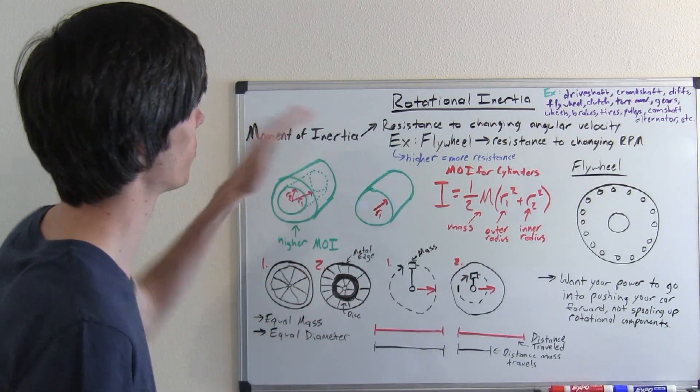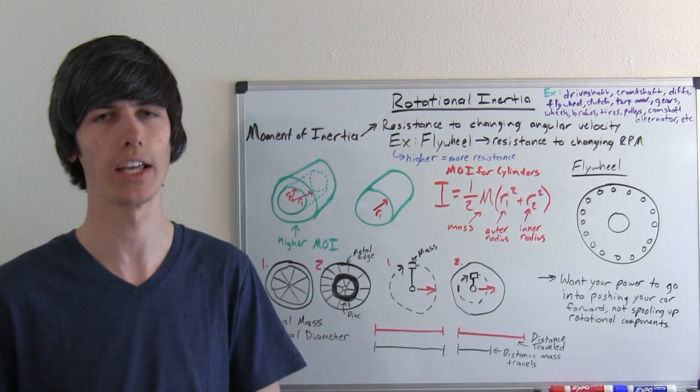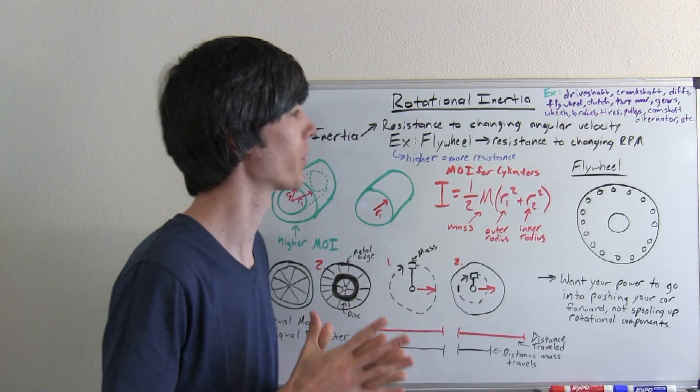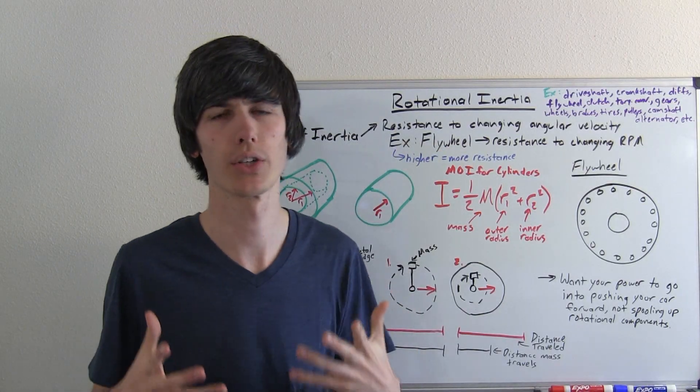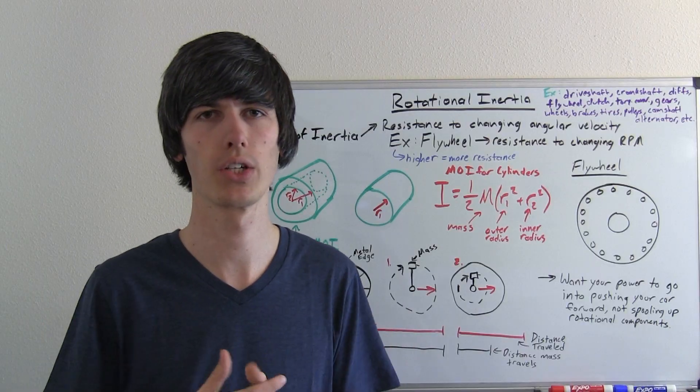An object's moment of inertia is its resistance to changing angular velocity. An example in an automotive application, for example a flywheel. A flywheel's moment of inertia is its resistance to changing RPM.